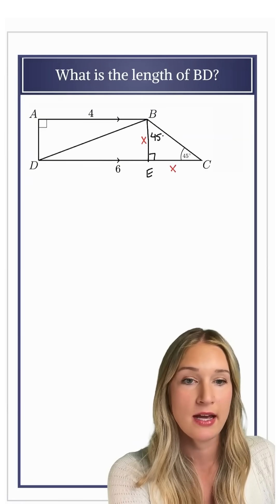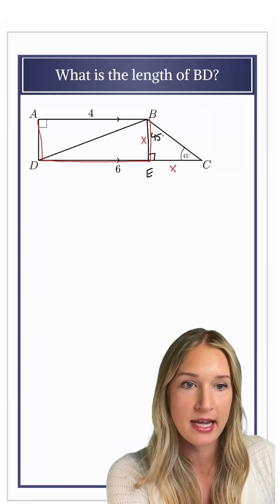Dropping that height, BE, down also creates a parallelogram here, ADEB, which will be a rectangle.